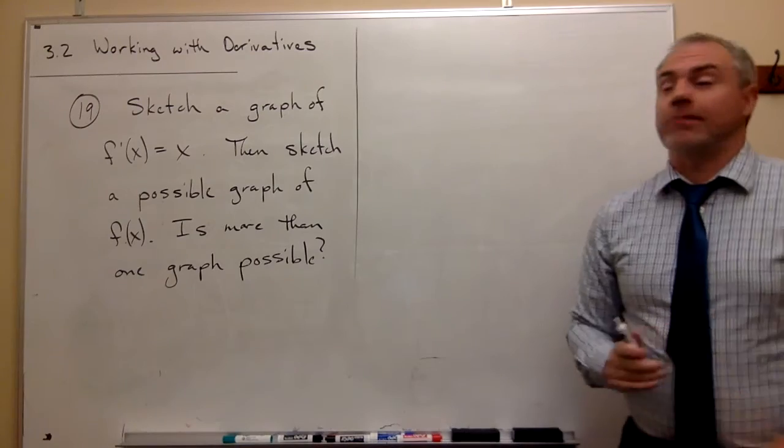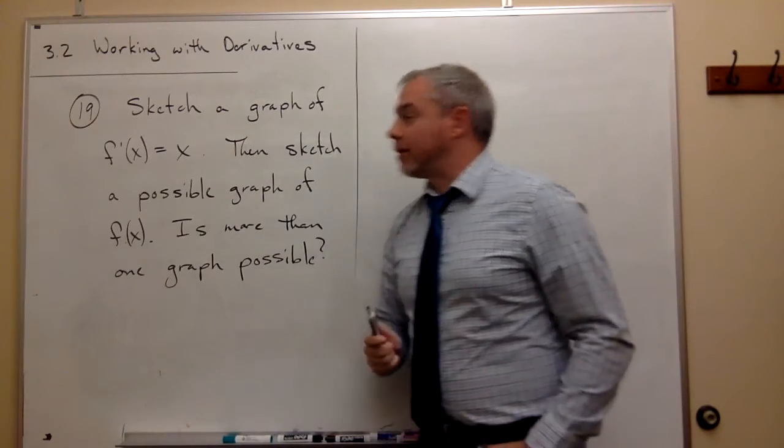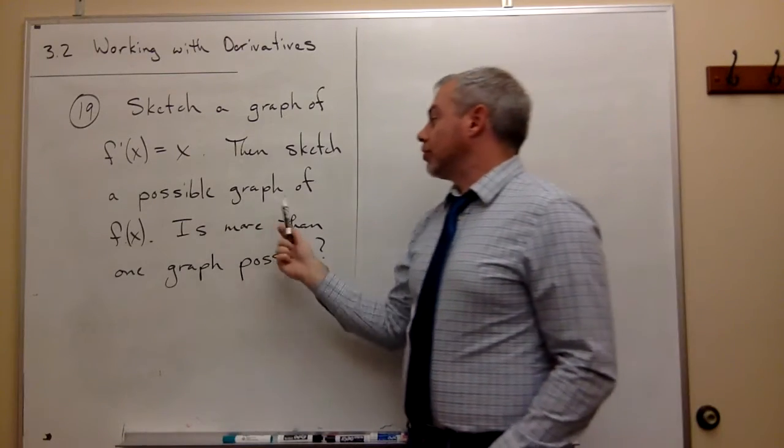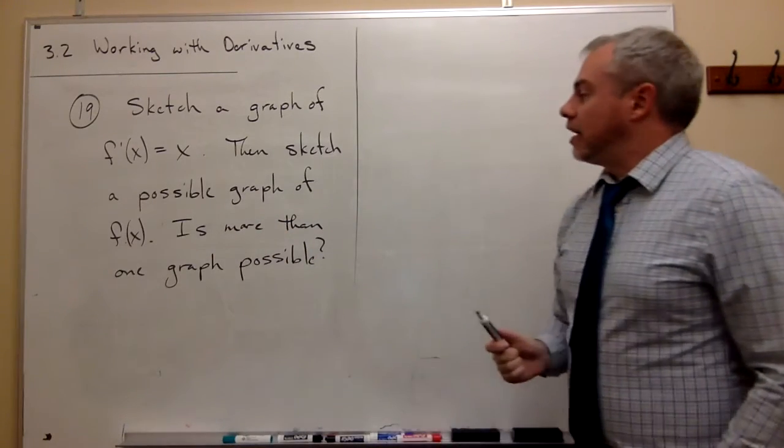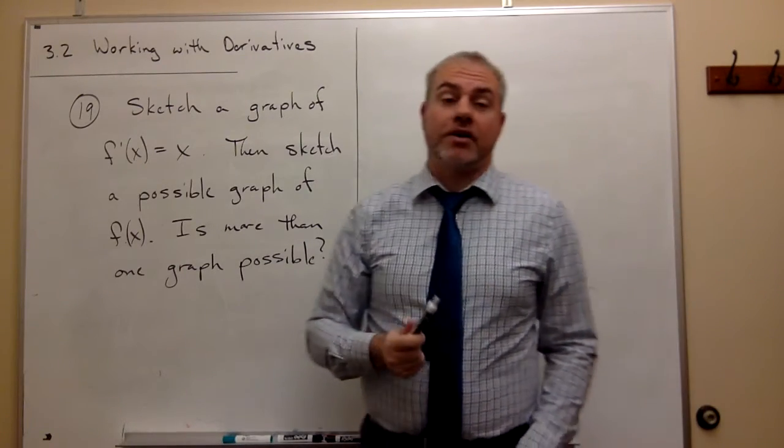In number 19 we want to do a couple of things. First thing we want to do is we want to sketch a graph of f prime of x equals x. And then we want to sketch a possible graph of f of x. And then they ask the question is more than one graph possible.